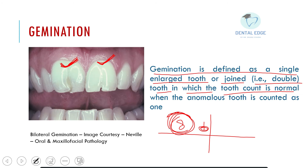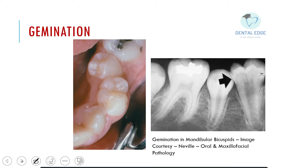In this image, there are premolars showing germination. On the x-ray, you can appreciate two incompletely separated crown structures appearing as a larger single unit, and they have a single root canal.